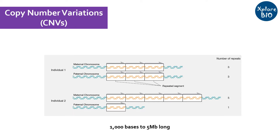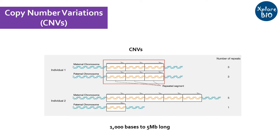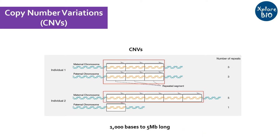In this picture you can see individual 1 has 3 copies of genome segment highlighted in orange color in both the parental chromosomes. Due to copy number variation in individual 2, the number of copies increases to 5 in the maternal chromosome while decreases to 1 in the paternal chromosome.